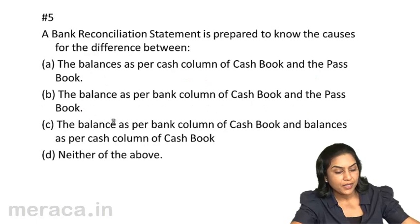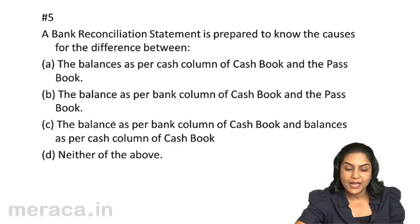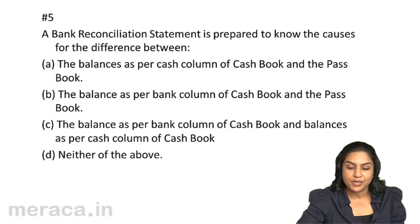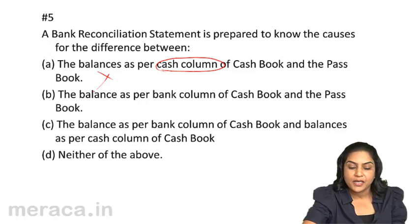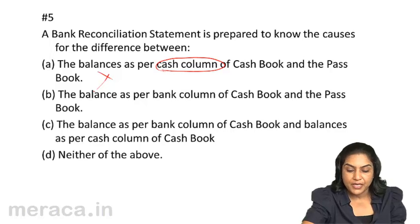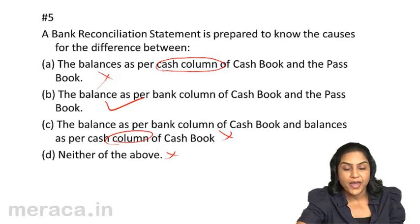Let's move on to the fifth one. A bank reconciliation statement is prepared to know the causes for the difference between the balances — the cash column has nothing to do with the bank reconciliation statement. It is the balance as per the bank column of the cash book and the pass book that matters. So the correct answer should be 5B.